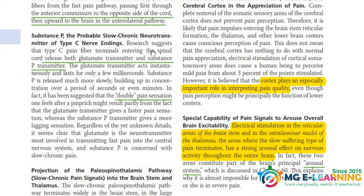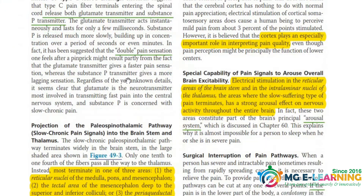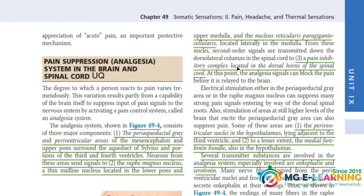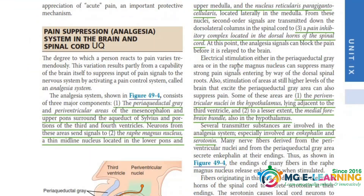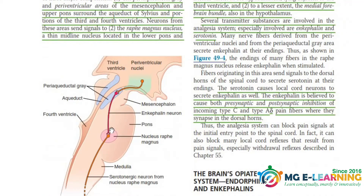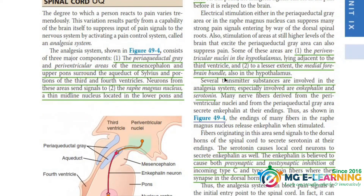The types of transmitters involved are also covered here. These yellow highlighted points are very important. The next page is important — a very important UQ on pain suppression and the analgesia system. You can draw and label this diagram, and all these points are very important. You can read the whole paragraph.